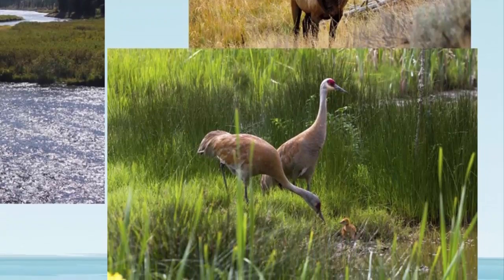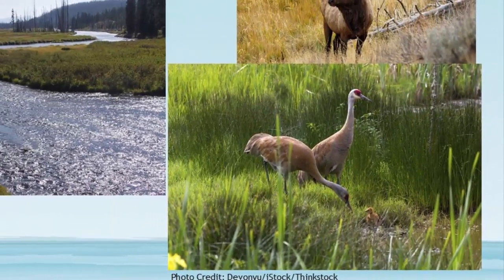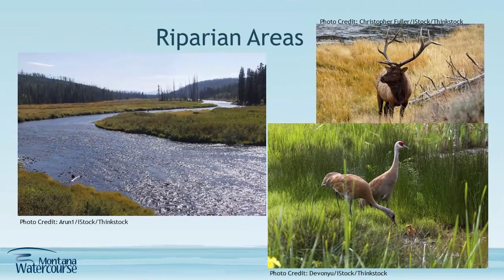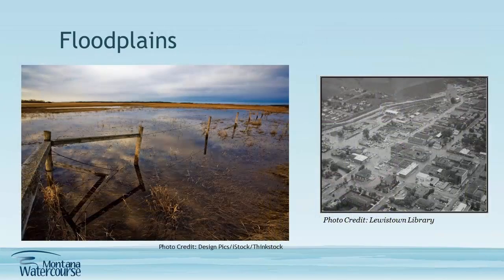Riparian areas are about 1% of the land in Montana, and they provide important habitat for many different kinds of wildlife. Floodplains are low-lying areas prone to flooding, usually adjoining rivers and lakes. Floods are a natural part of the ecosystem process. A relatively undisturbed floodplain can buffer the effects of flooding by slowing down and storing floodwaters, and also helping reduce negative effects to water quality, such as increased sedimentation. The riparian area provides these services as well.